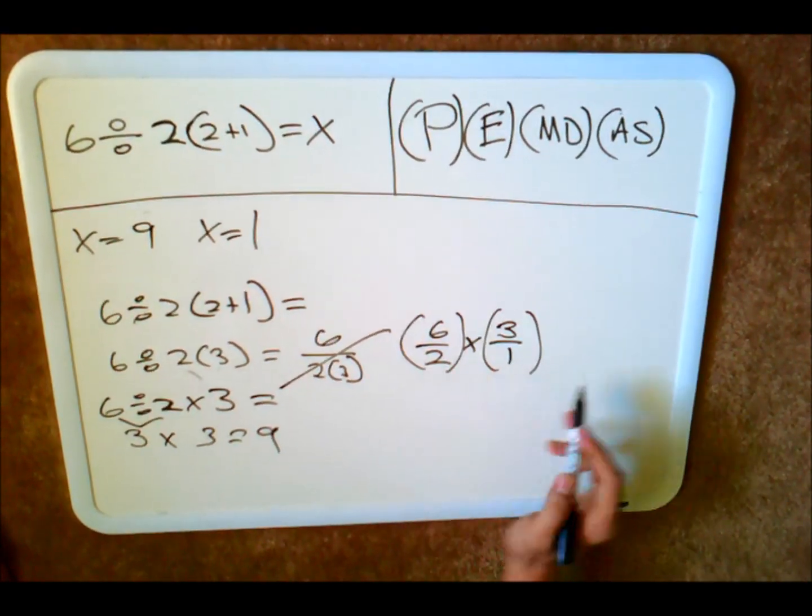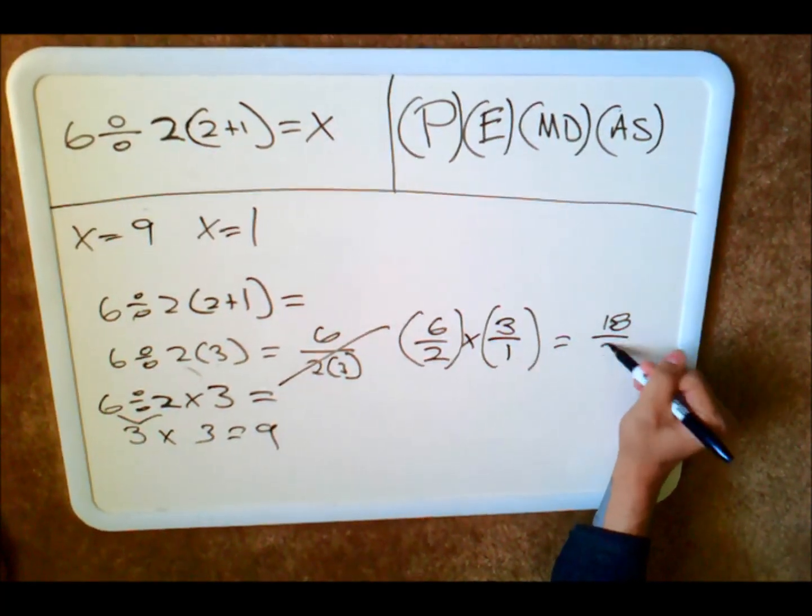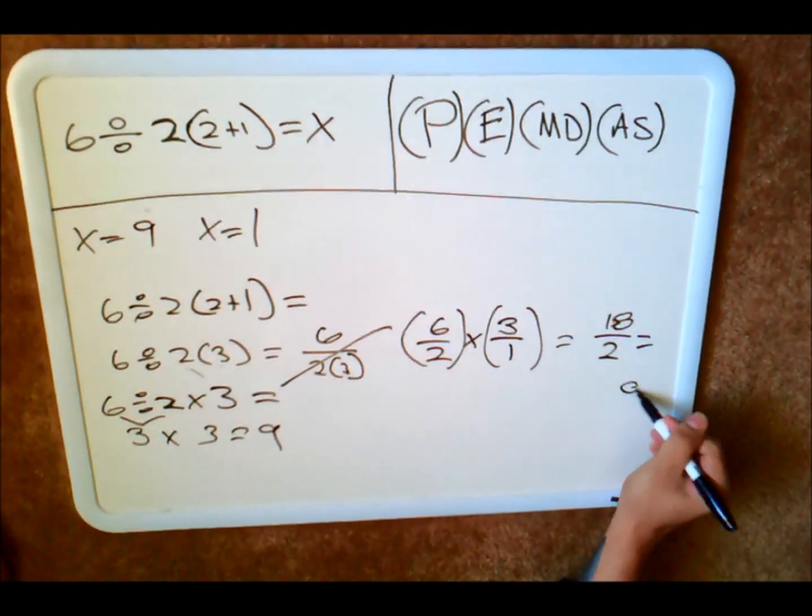So when you do it like this, you're going to get 18 over 2, and that of course is equal to 9.